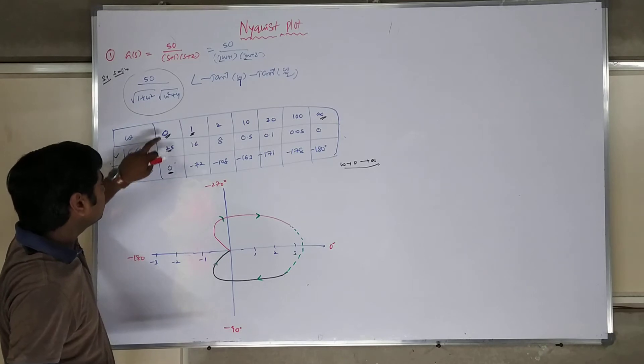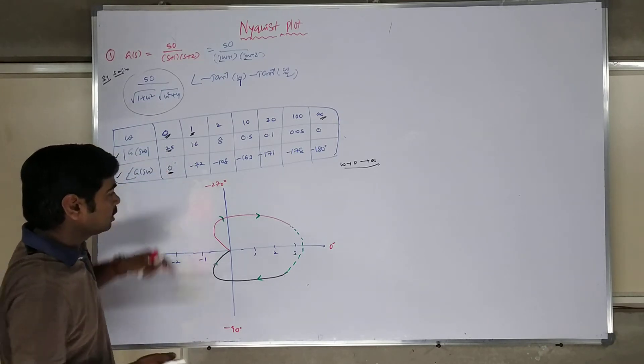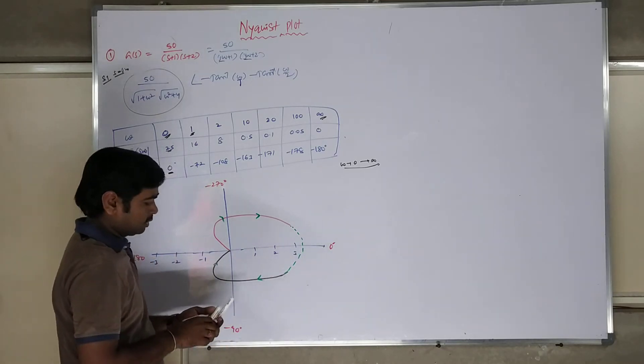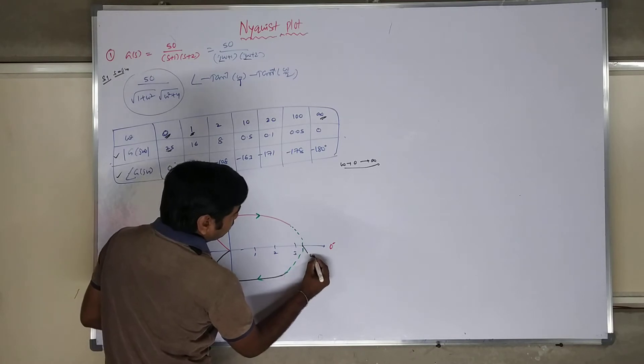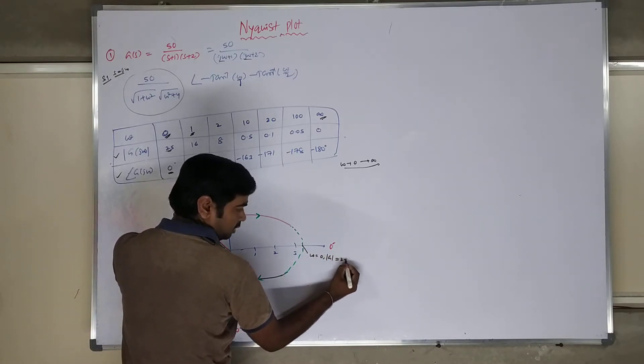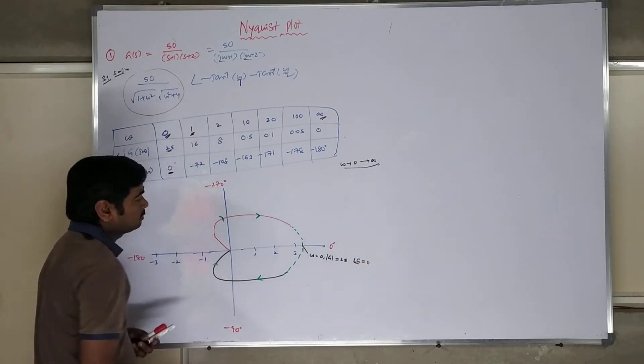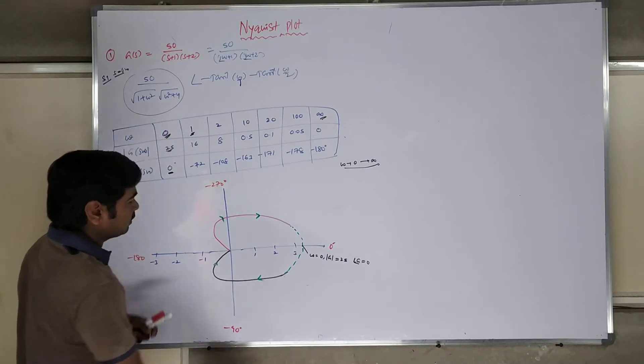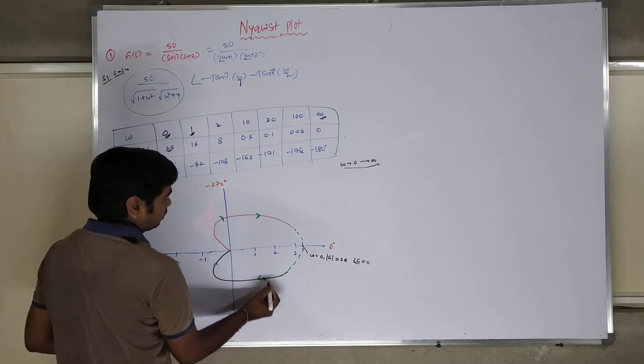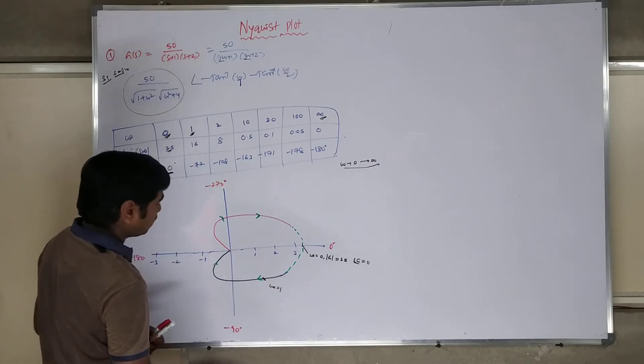So first case, it is 0 degrees. Magnitude is 25. Angle is 0 degrees. At 0 degree angle, magnitude is 25. So here, omega is equal to 0, magnitude of G is equal to 25, angle is 0. Here I should mark your point. Corresponding at 16 magnitude, minus 72. So we are having minus 72 point here. This is omega is equal to 1. Then omega equals 2.